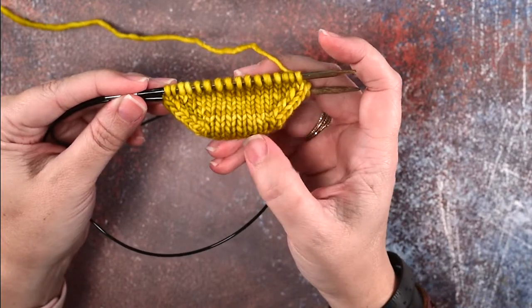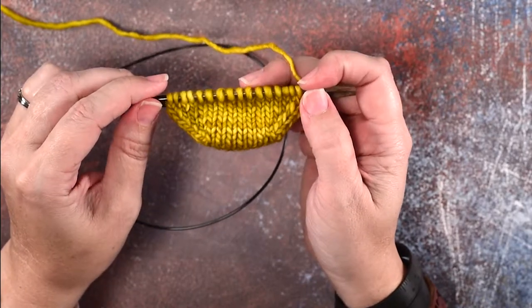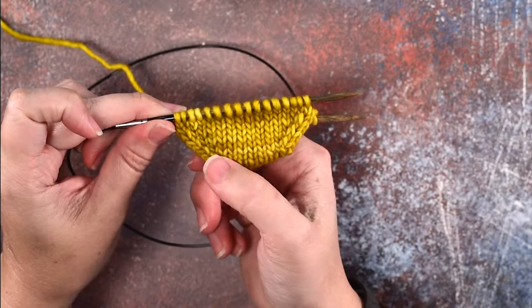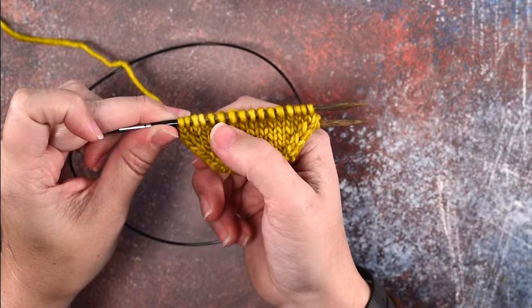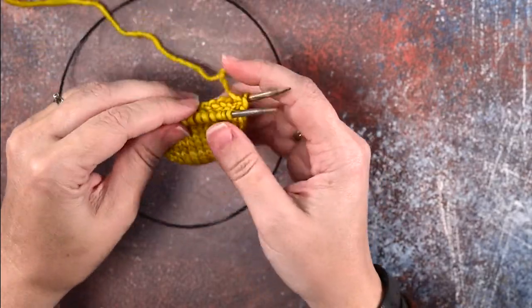If you can see, I've cast on a lower number of stitches here and I've increased on the right and left side of my work. On the left side here I place the make one right so that the increased stitches would lean to the right of the stitch that I placed them in. So I'll show you how to do that.